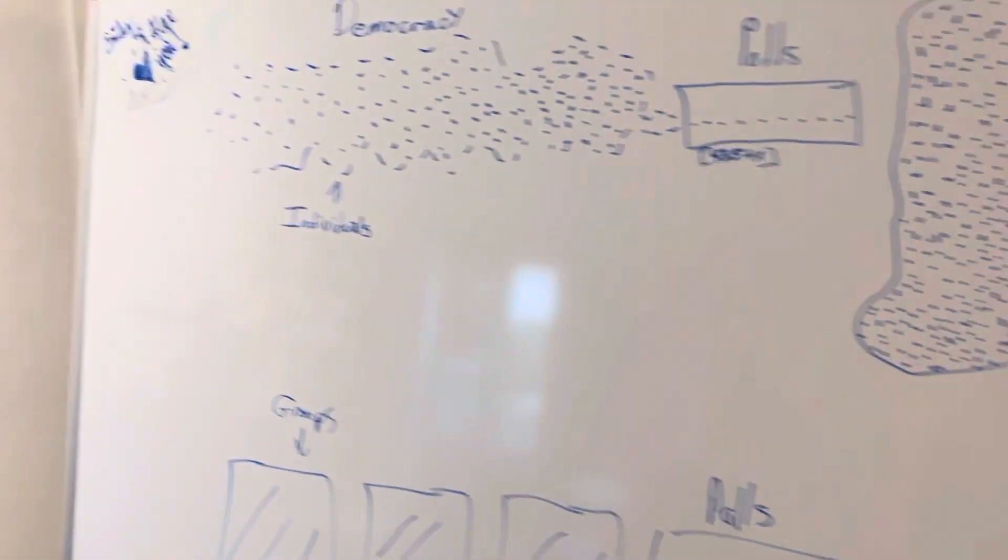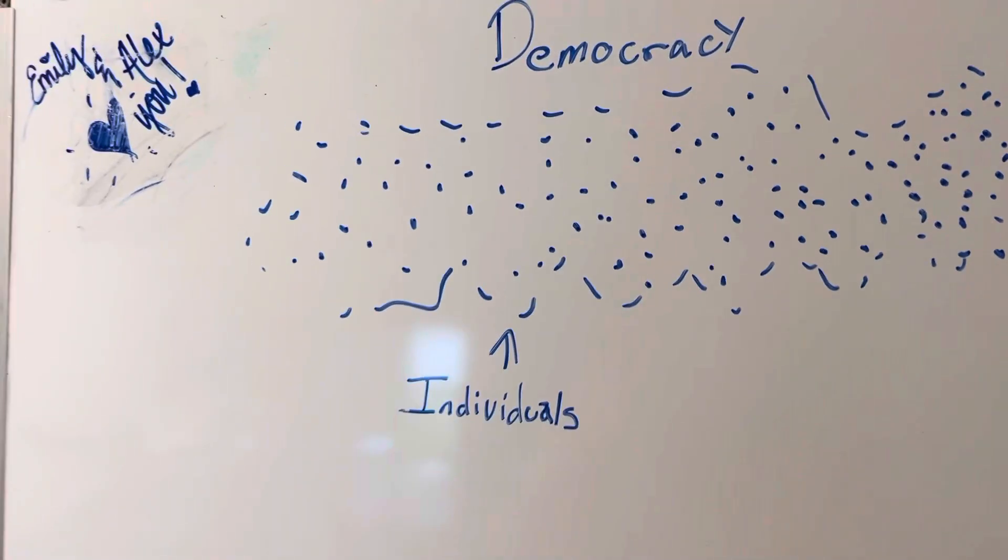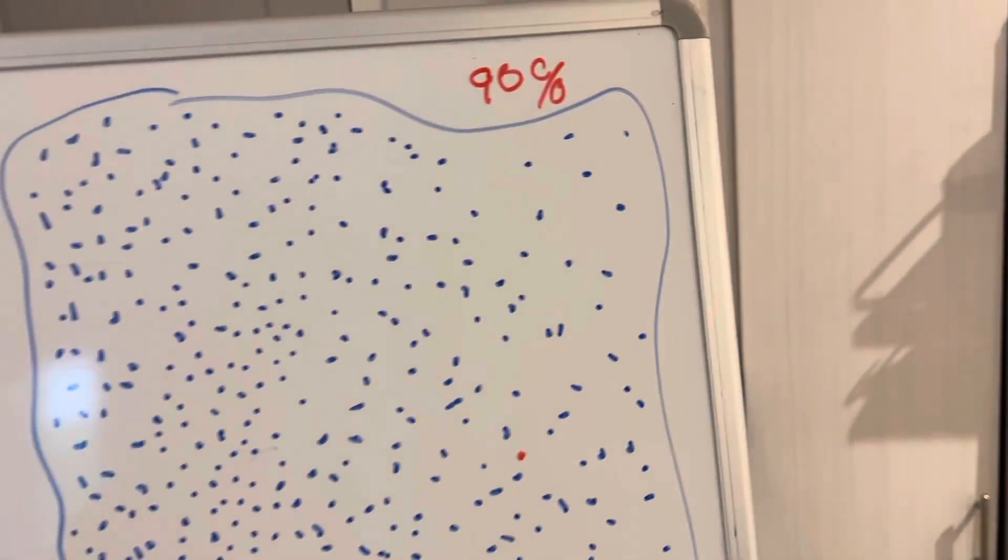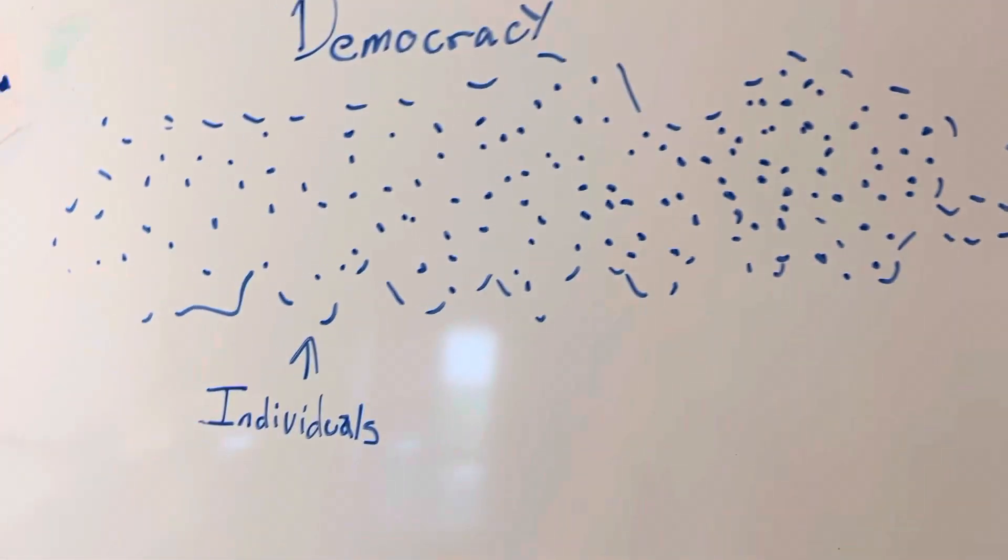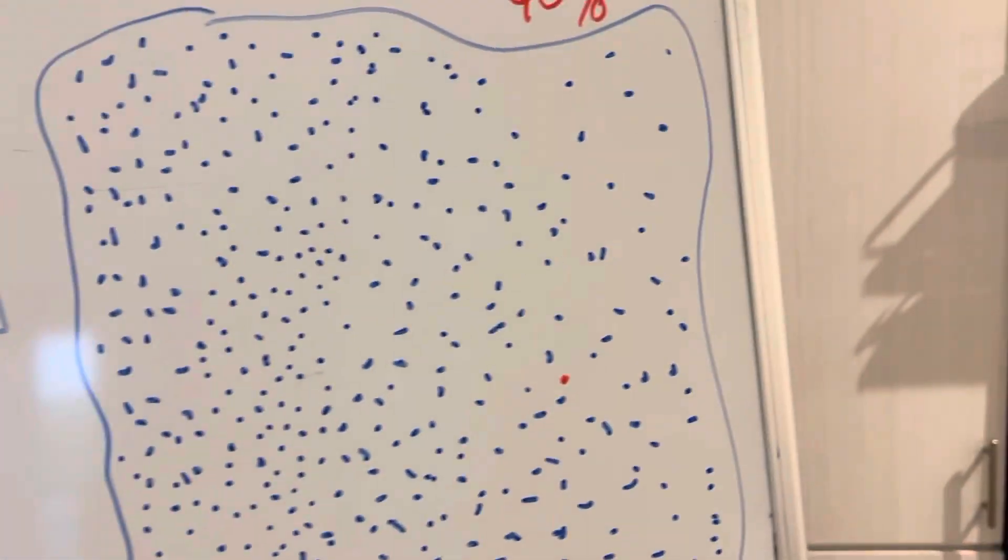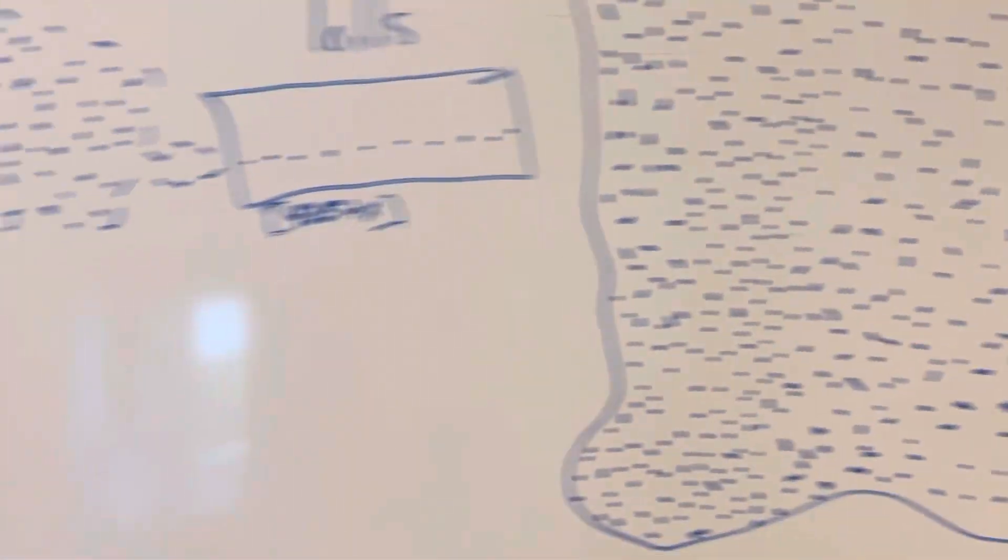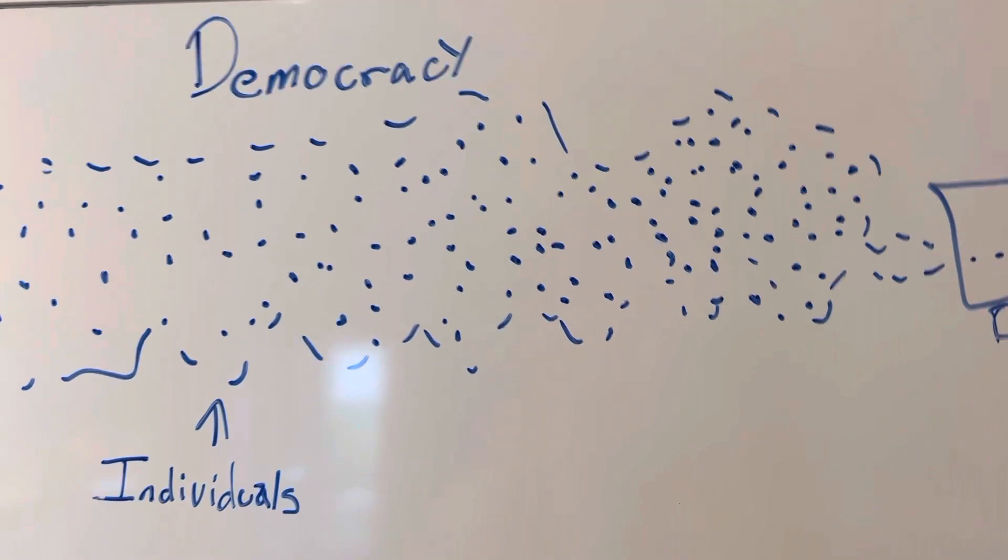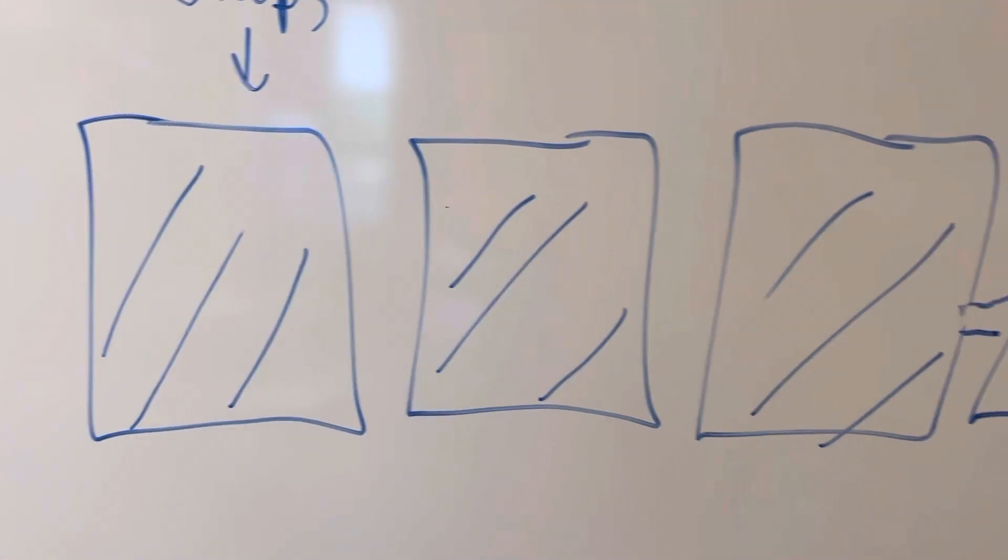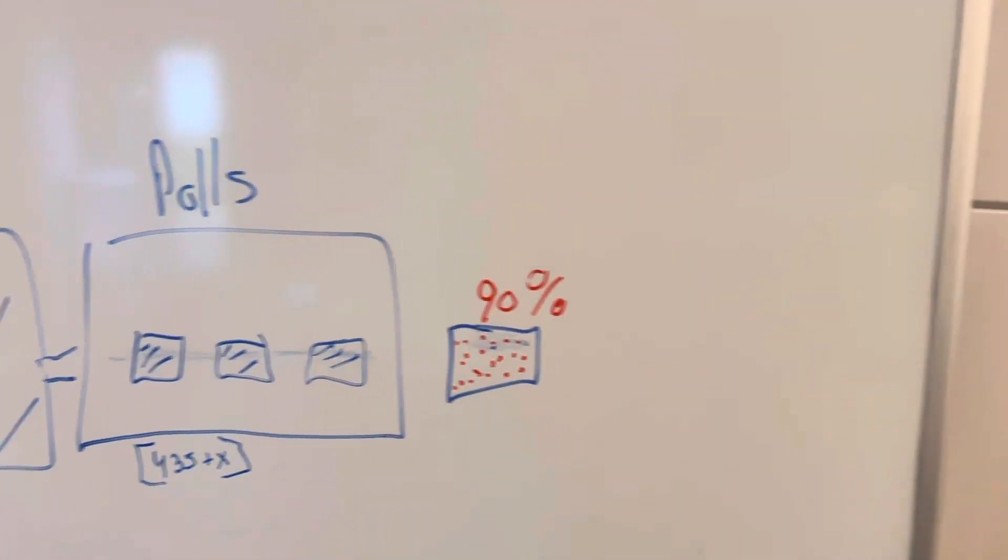If 100 million people are picking the one with the most money 90% of the time, and 100 million individuals can't do that, then the 100 million people are in groups, and they're going to the polls in groups.